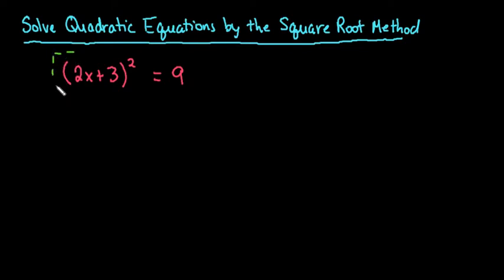We want to make sure that our squared term is alone on one side, and in this case it already is. There's nothing on the outside. If you had something on the outside, then you would move that to the other side.